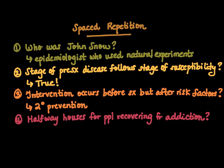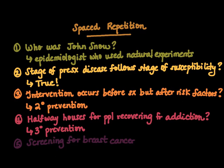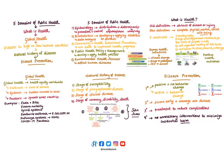Question four: halfway houses used for people recovering from addiction are an example of what type of disease prevention strategy? That would be tertiary prevention. And lastly, question five: screening for breast cancer is an example of which disease prevention strategy? This is a secondary prevention public health strategy.